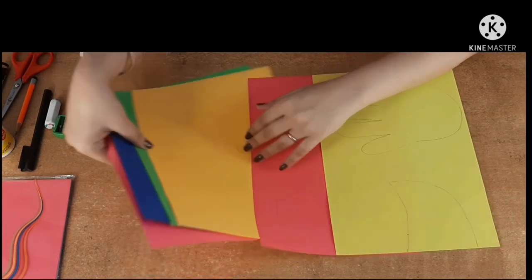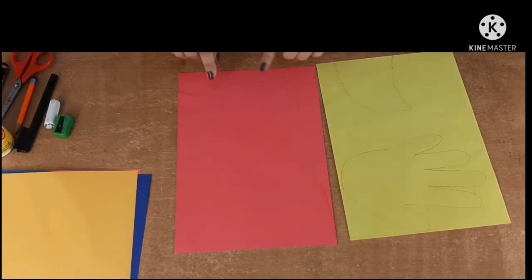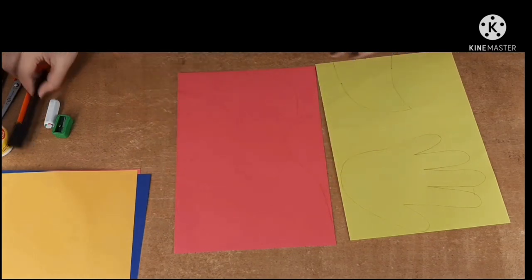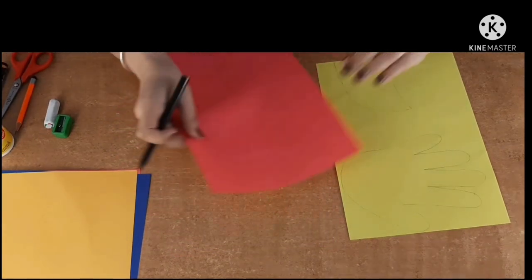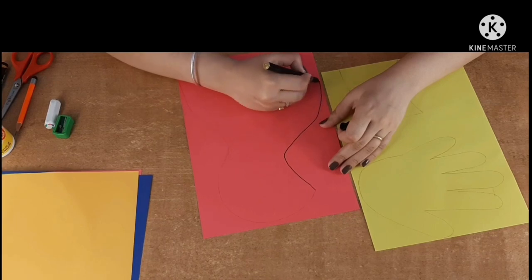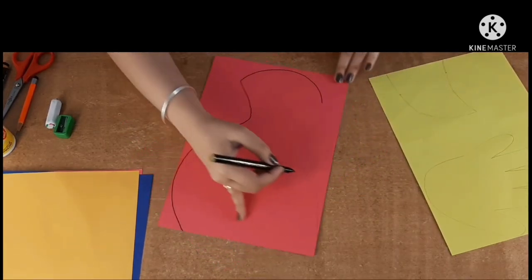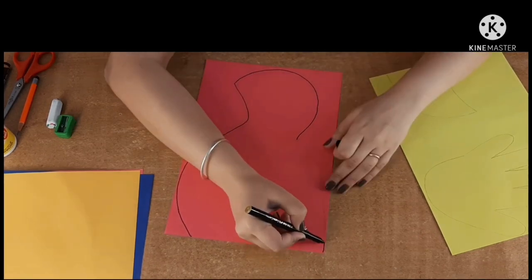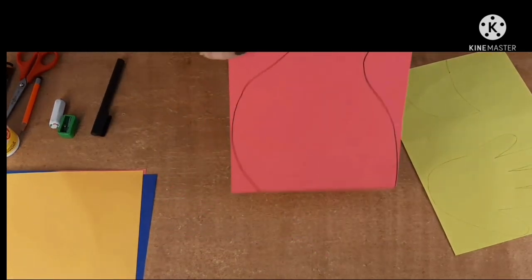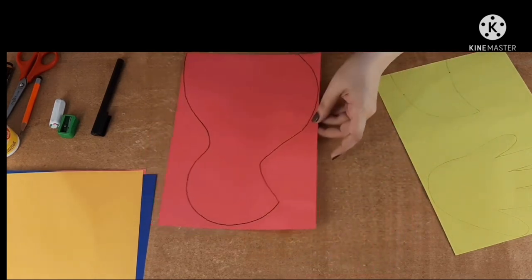Now I'll put these sheets on the side. And I've already drawn on a pink sheet, I've already drawn a bird's body. So that you can see it properly, I'll just outline it with a sketch pen.